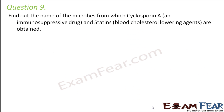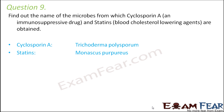Question number 9: Find out the name of the microbes from which cyclosporine A, an immunosuppressive drug, and statins, blood cholesterol-lowering agents, are obtained. Cyclosporine A is derived from Trichoderma polysporum, and statins are derived from Monascus purpureus. Different types of microbes give rise to different types of antibiotics, medicines, and enzymes.